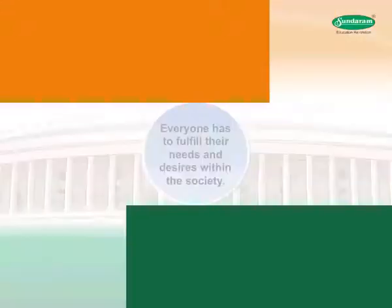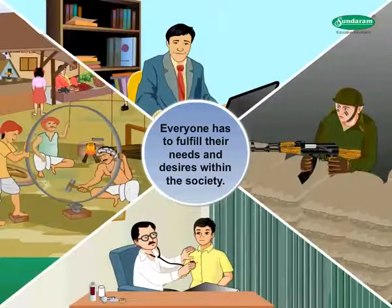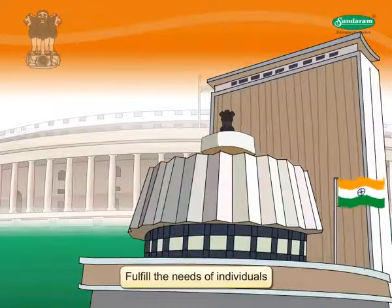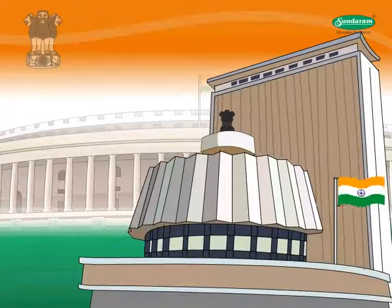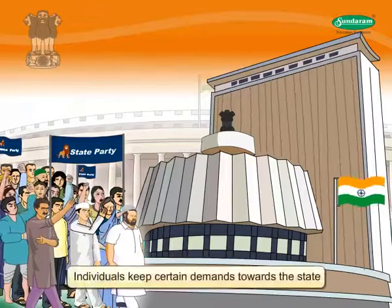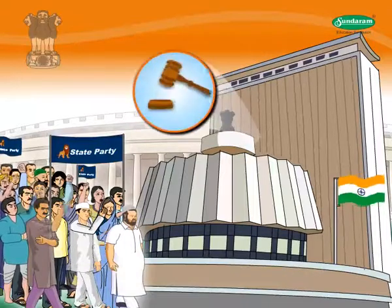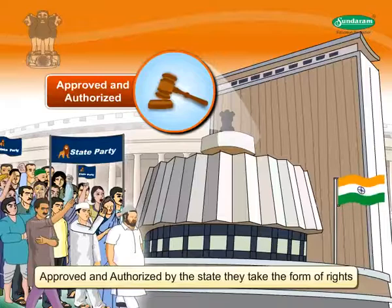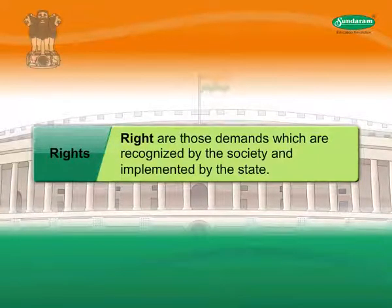Rights. Everyone has to fulfill their needs and desires within the society. It is a prime duty of the state to fulfill the needs of individuals and to provide opportunities for their development. In order to live a happy and ideal life, individuals keep certain demands towards the state. When these demands are approved and authorized by the state, they take the form of rights. Rights are those demands which are recognized by the society and implemented by the state.